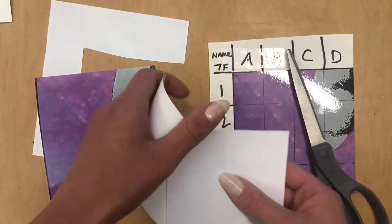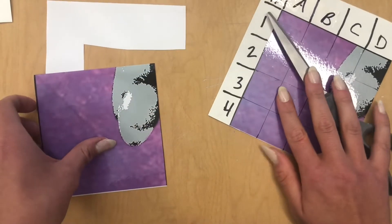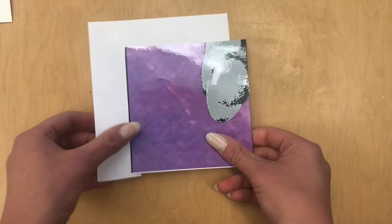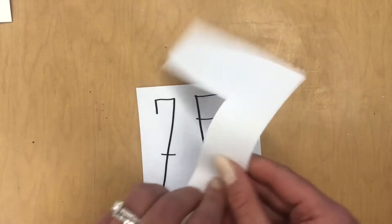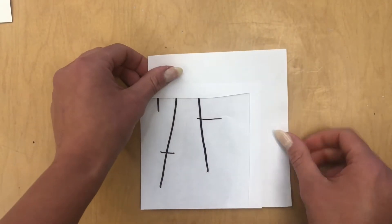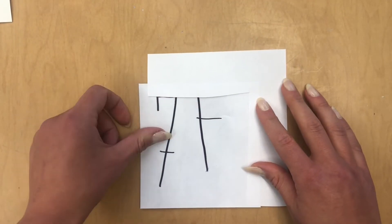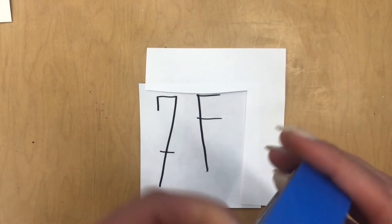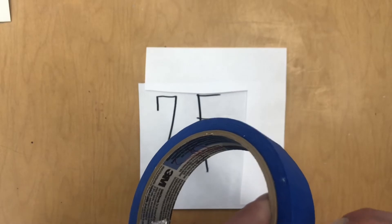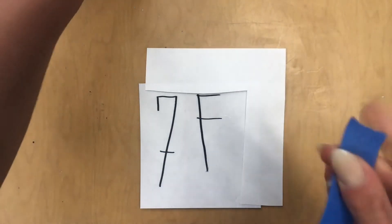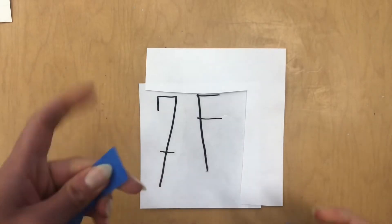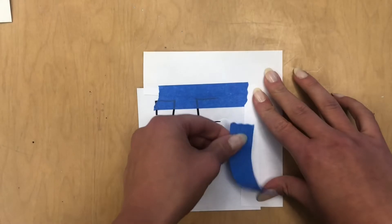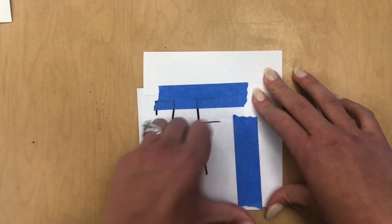Now I'm going to tape this to the back of my mural block. Okay. So let's flip this over. And overlap it just slightly. And you're going to tape it down. I like to use two pieces of tape for this step.